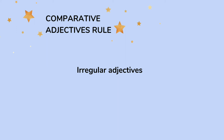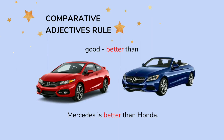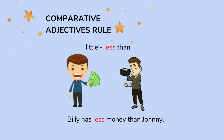Irregular adjectives are adjectives that do not change form by adding -er. They do not obey the typical rules when their forms are changed, and they can confuse us. For example, good becomes better than — a Mercedes is better than a Honda. Little becomes less than — Billy has less money than Johnny.